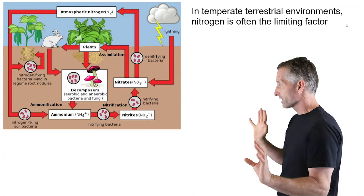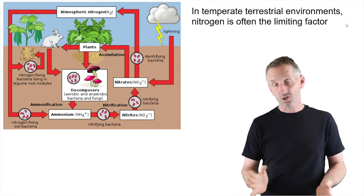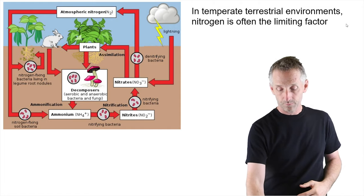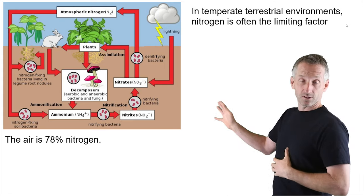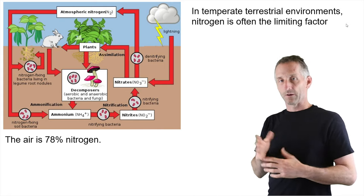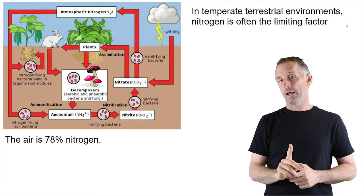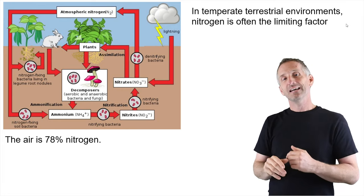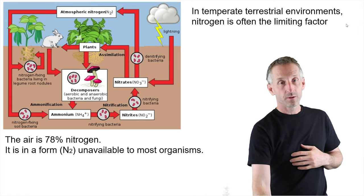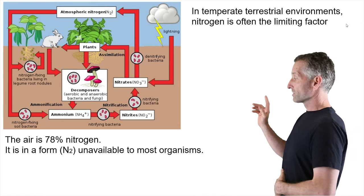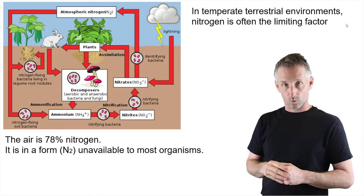This might initially seem crazy because there's a lot of nitrogen out there — it shouldn't seem like it should be limiting. For instance, the air you breathe is about 78% nitrogen. But the reason nitrogen limitation occurs is that this atmospheric nitrogen, N2, is in a form that is unavailable to the metabolic processes of most organisms.